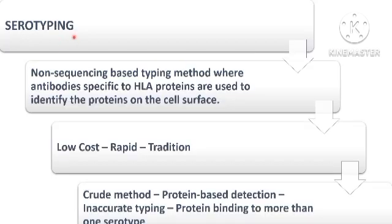Serological typing was one of the earliest methods used to detect HLA antigens. It involves mixing the patient's blood sample with specific antibodies that bind to HLA antigens. If the antigens are present, they will form visible clumps, that is agglutination. The advantages are low cost, rapid, and it is an age-old traditional method. Limitations include that it is a crude method based on protein detection, and it may lead to inaccurate typing because protein binding can happen to more than one serotype.